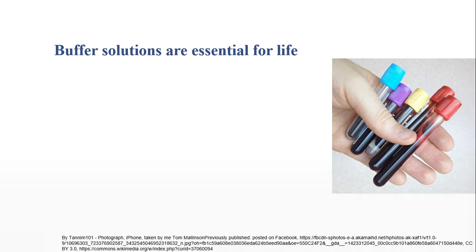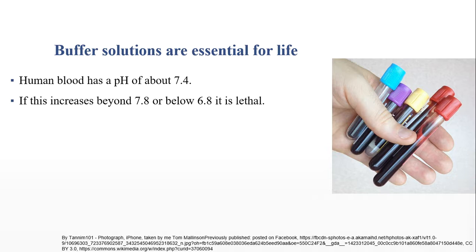Buffer solutions are essential for life, as life is pH sensitive. Bacteria, for example, can't grow in too low nor too high pH — they have an optimum growth at a specific pH value. Same goes for us: human blood has a pH of about 7.4. If this is changed much — beyond 7.8 or below 6.8 approximately — it's lethal. Our cells and proteins will stop functioning as they're supposed to.